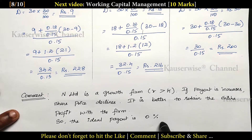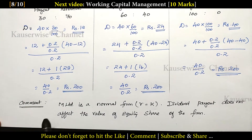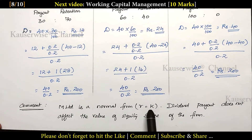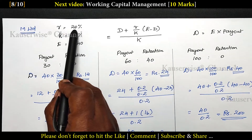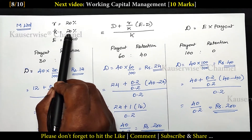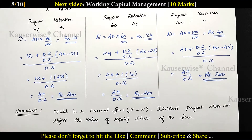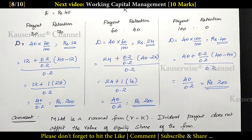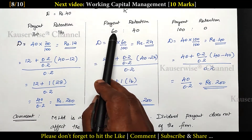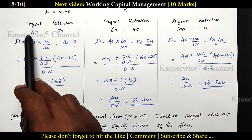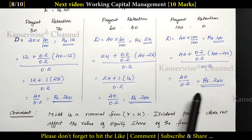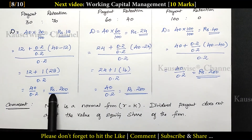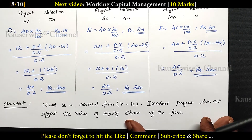M Limited is a normal firm. The reason is rate of return is equal to cost of capital — R equals 20% and K also equals 20%. For a normal firm, dividend payout does not affect the value of equity shares. Whatever the proportion of payout — 30%, 60%, or 100% — the value of the share remains the same at 200. So the payout proportion decision does not affect the value of shares.